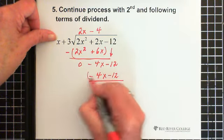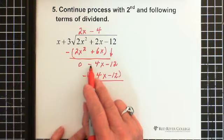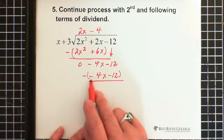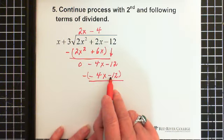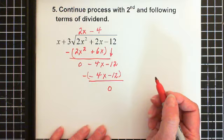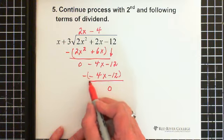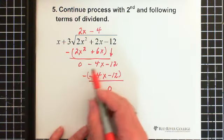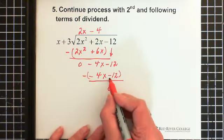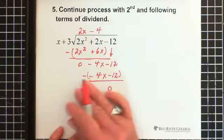Don't forget, we're subtracting this entire piece. We have minus 4x minus 12, and we're subtracting the exact same thing, minus 4x minus 12. When you subtract the same thing, you always get zero. The minus times the minus makes plus 4x, so minus 4x plus 4x is zero. And the minus times minus 12 makes plus 12, so minus 12 and plus 12 gives zero.